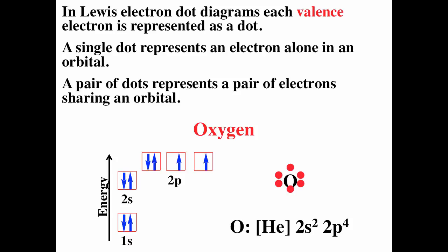In Lewis dot diagrams, each valence electron is represented as a dot. A single dot means an electron is alone in an orbital; a pair of dots means you have a pair of electrons in an orbital. For example, the electron configuration for oxygen is 1s², 2s², 2p⁴. Lewis diagrams are only concerned with the valence electrons — the outer shell electrons — so that's these six electrons. We have two pairs of dots and two electrons in lone orbitals.